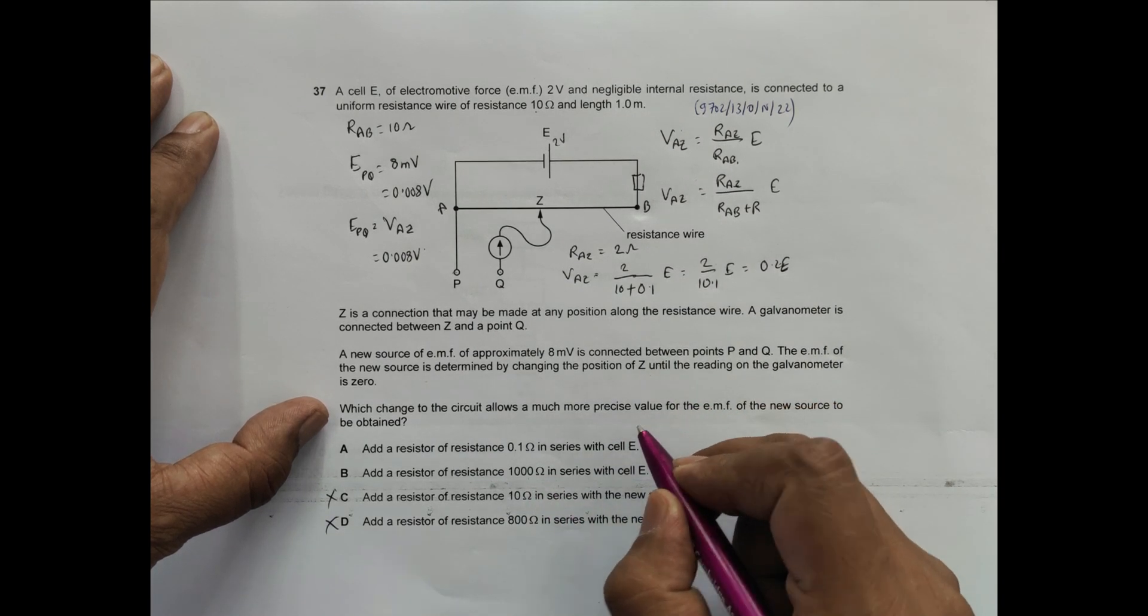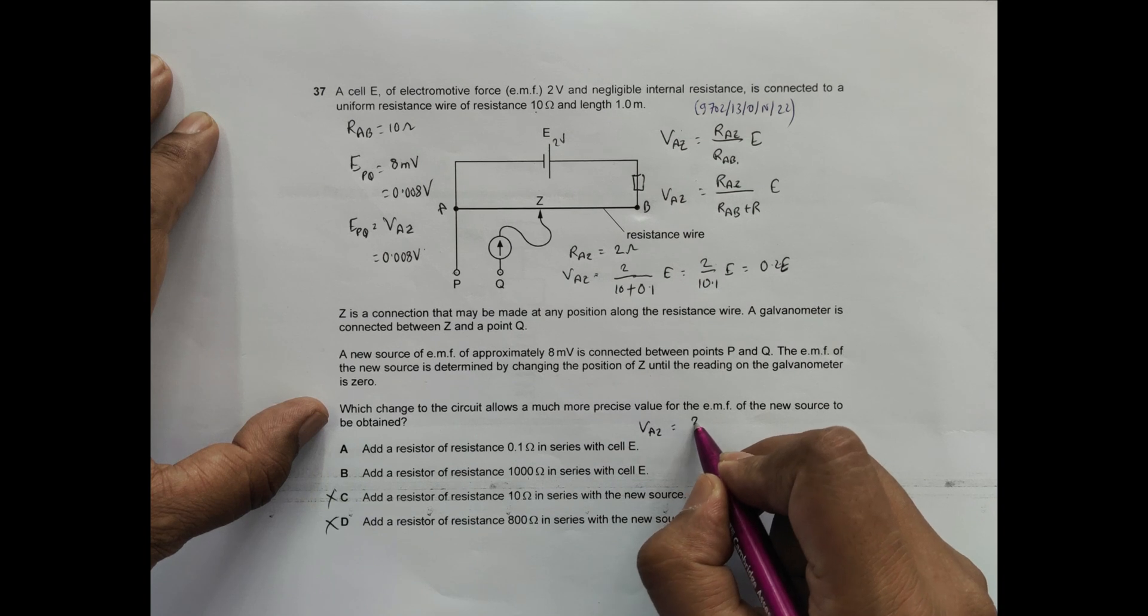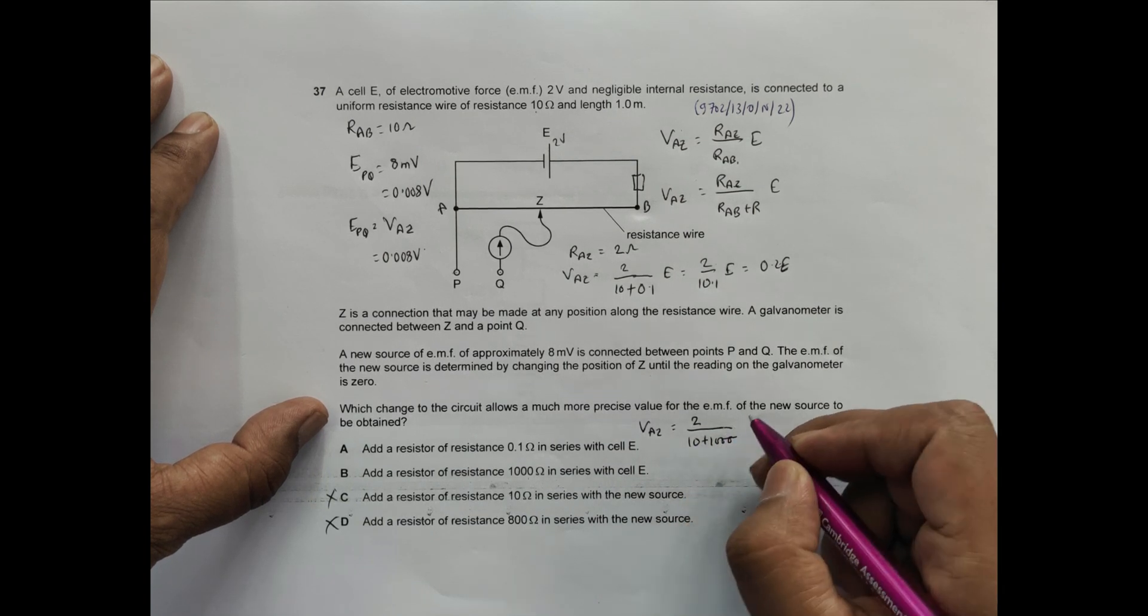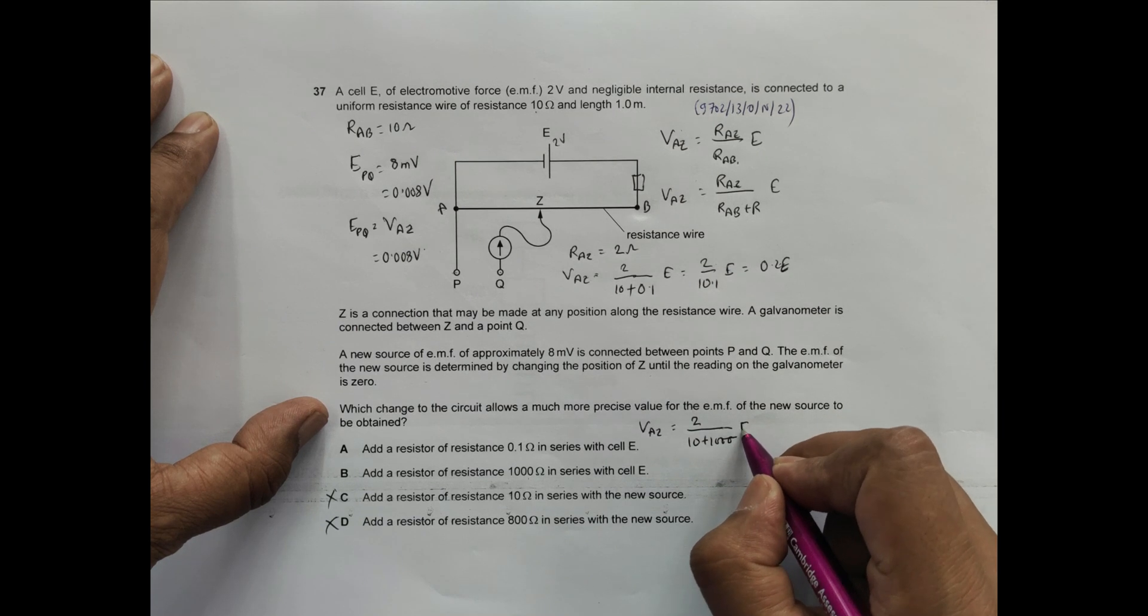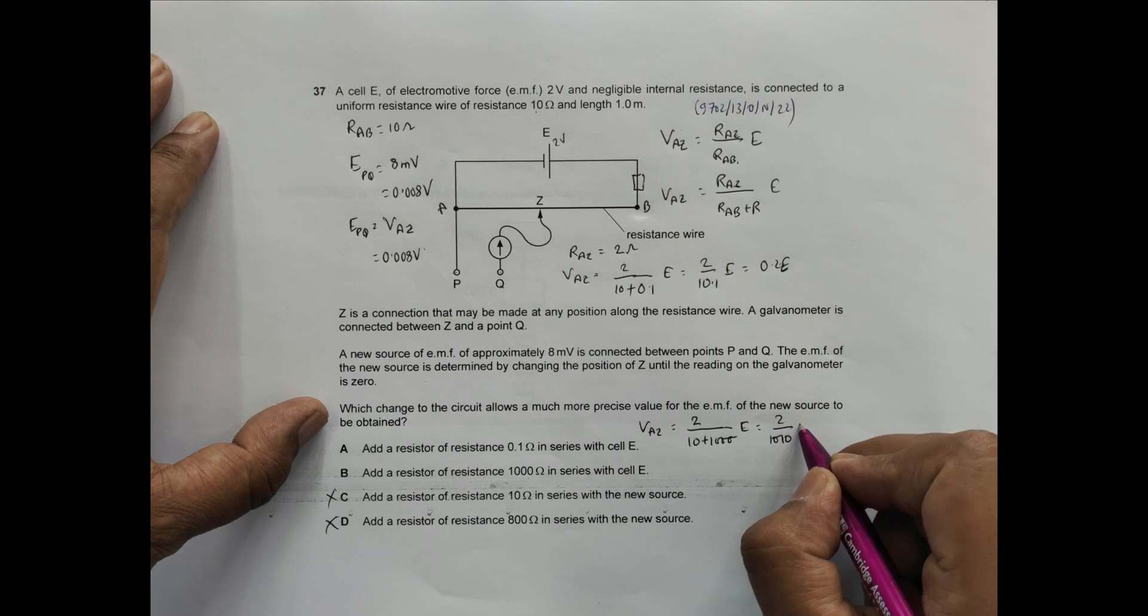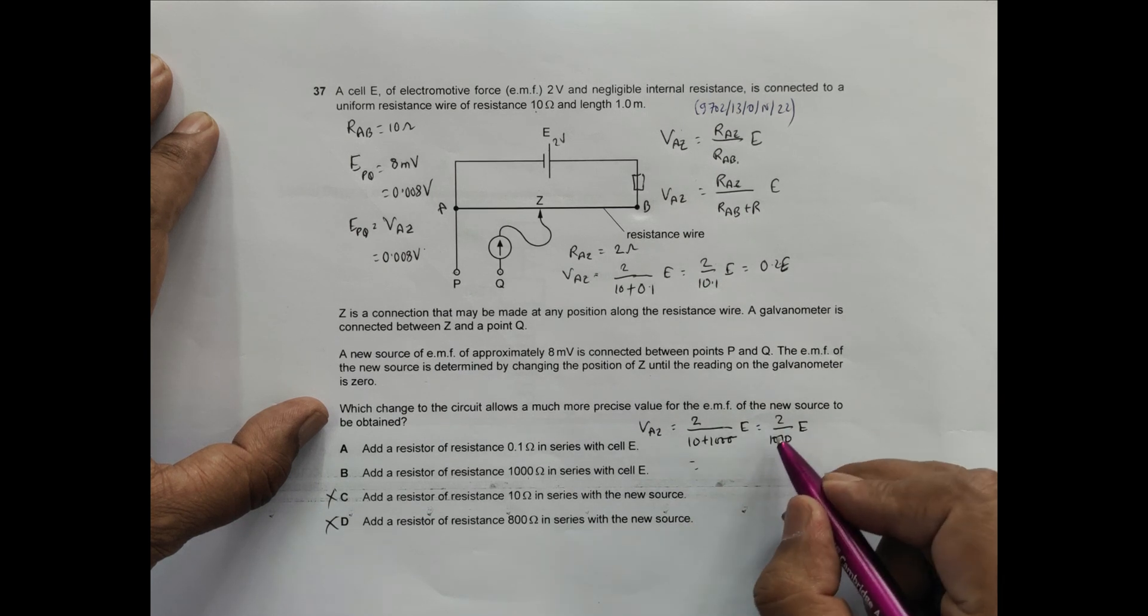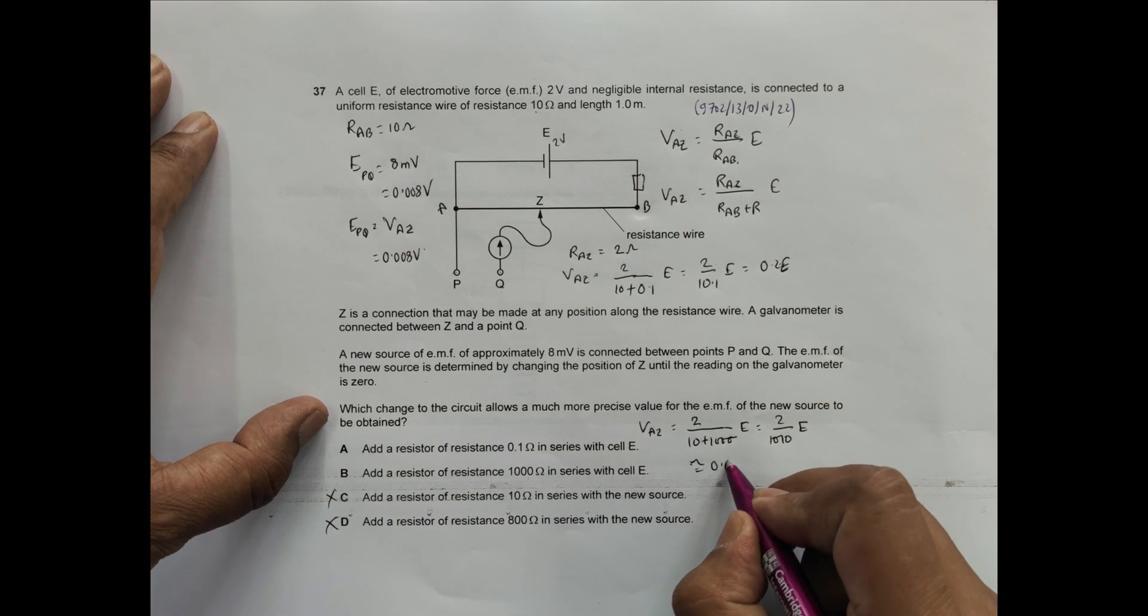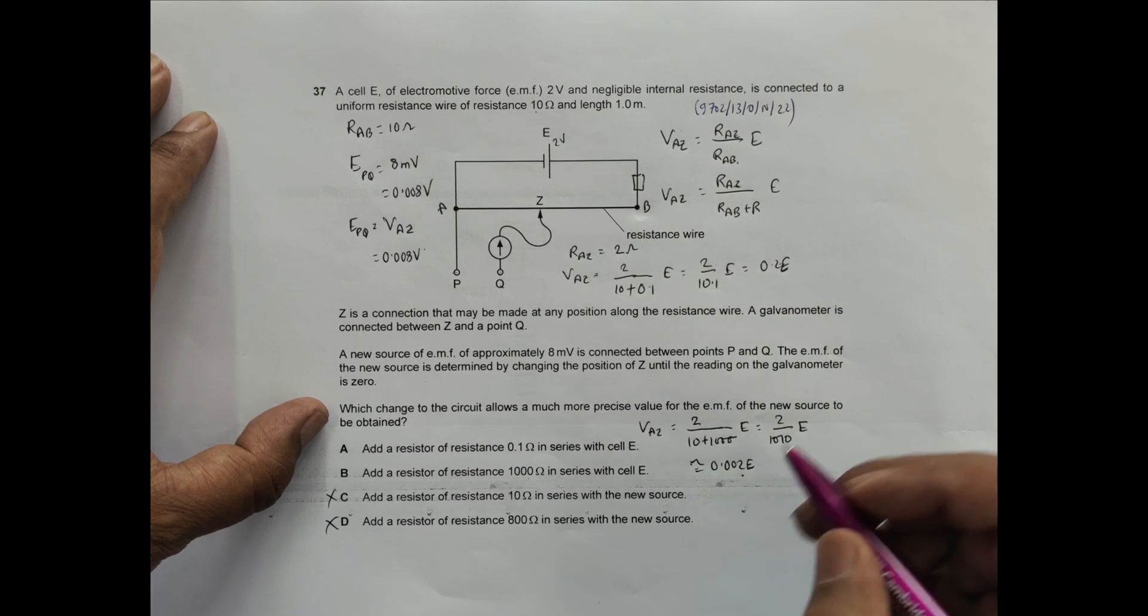But if I add 1000 ohms in series, VAZ will equal 2 divided by 10 plus 1000, times E. That's 2 divided by 1010 times E, approximately 2 by 1000, almost 0.2E. This will be highly precise compared to the first case.